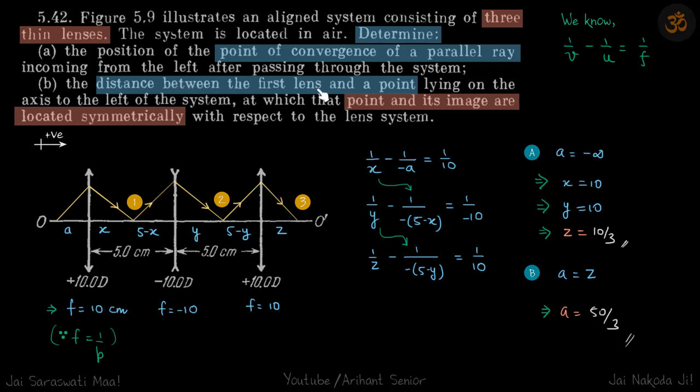Second is distance between the first lens and a point if point and image are located symmetrically. So if the object is here and the final image is here, then this distance should be same as this distance. So in that case what will be the value of this a?